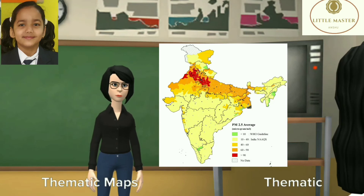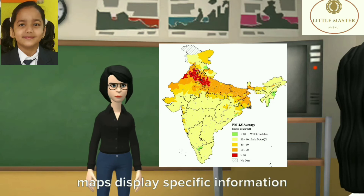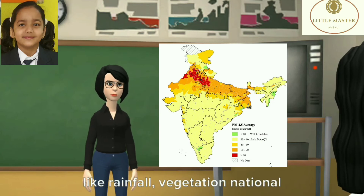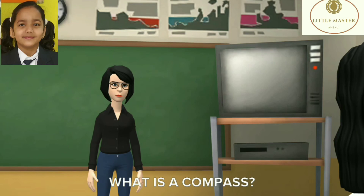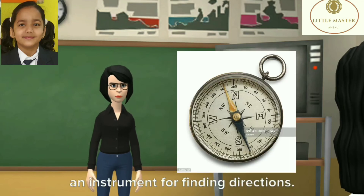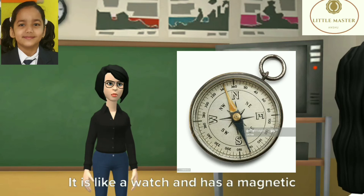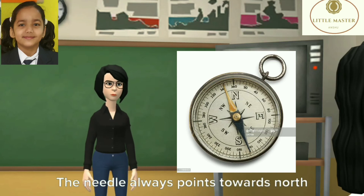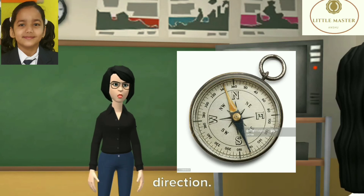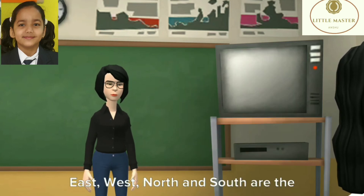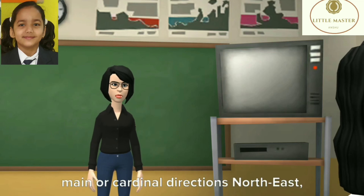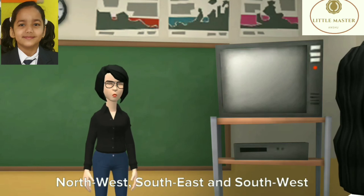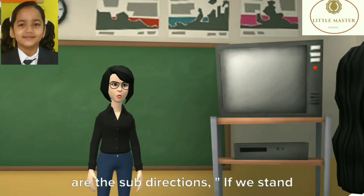Thematic maps display specific information like rainfall, vegetation, national parks, etc. What is a compass? A compass is an instrument for finding directions. It is like a watch and has a magnetic needle. The needle always points towards the north direction. East, west, north and south are the main or cardinal directions. North-east, north-west, south-east and south-west are the sub-directions.